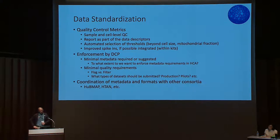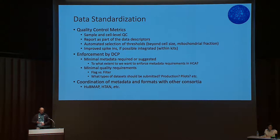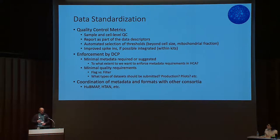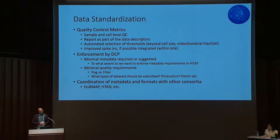Several groups also suggested improved spike-ins. Initially in early protocols there was lots of attention paid to ERCC spike-ins and others, and many normalization methods were designed around these. The newer suggestions were more advanced — perhaps having whole cell or artificial cell spike-ins, with desire that they be integrated as a standard, maybe with kits so everyone actually has them. The data standardization discussion naturally led to enforcement and requirements by DCP.